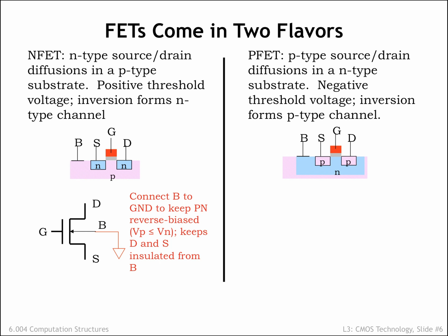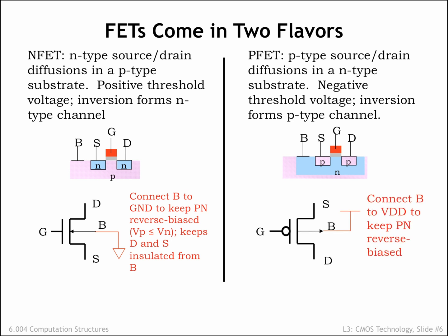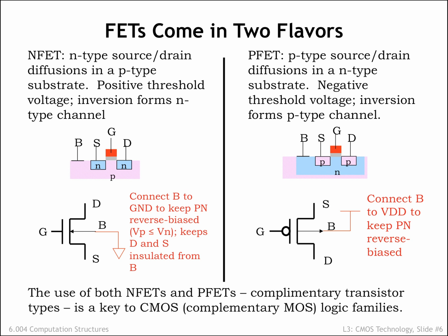We can also build a MOSFET by flipping all the material types, creating P-type source-drain diffusions in an N-type substrate. This is called a P-channel MOSFET, which also behaves as a voltage-controlled switch, except that all the voltage potentials are reversed. Control voltages that cause an N-channel switch to be on will cause a P-channel switch to be off, and vice versa. Using both types of MOSFETs will give us switches that behave in a complementary fashion — hence the name complementary MOS for circuits that use both types of MOSFETs.